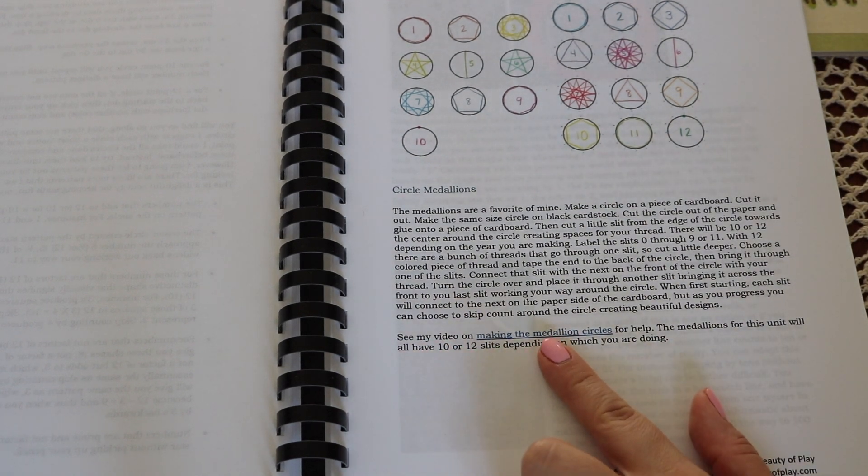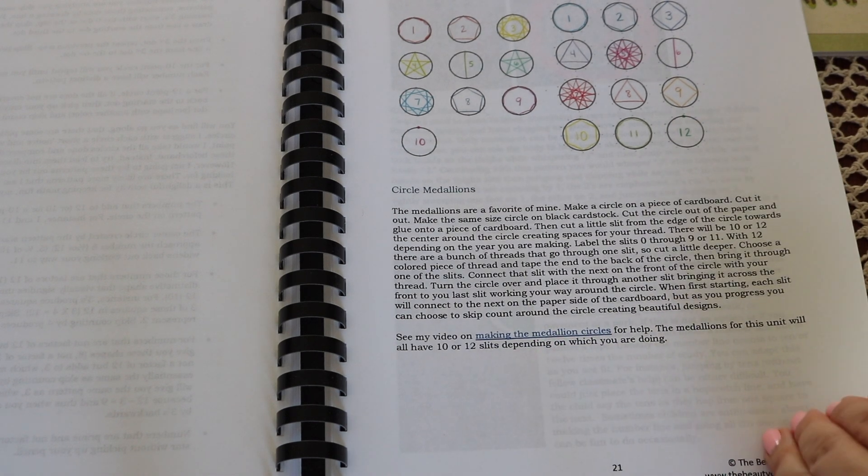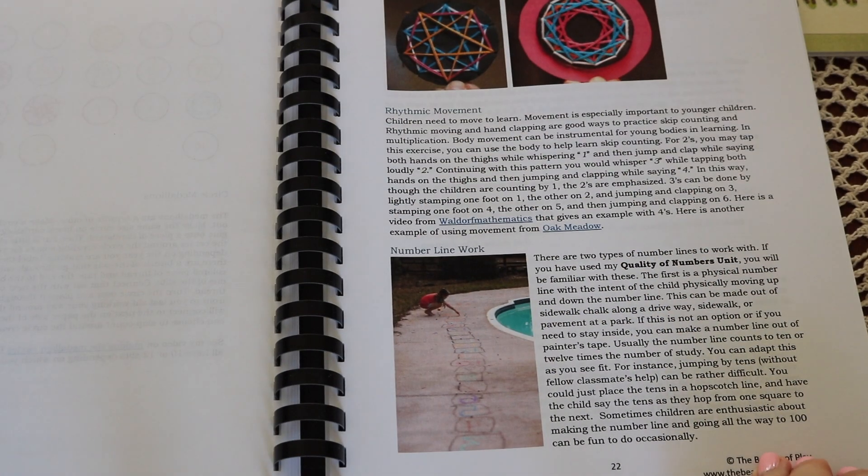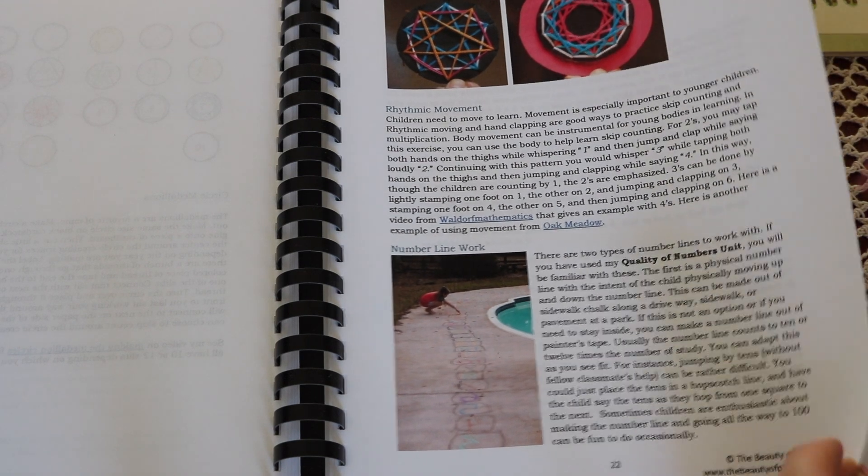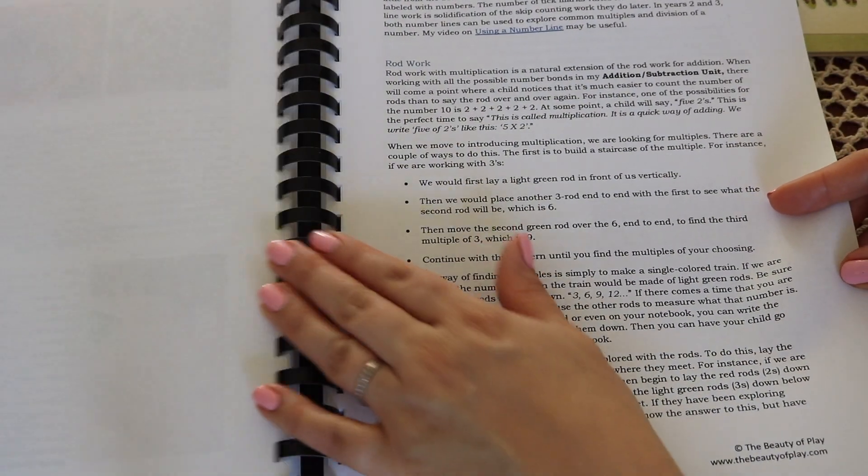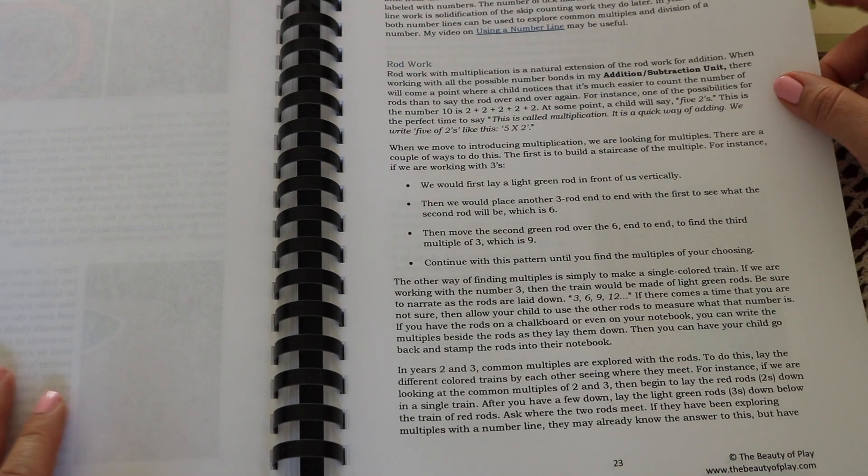In this introduction, you'll also find information and portions on math journaling, narration, color coding, rhythm, mental math tools, and the language of math. There is also written explanations of specific fundamental work that can be done with each number each year. Some examples are the multiplication flower, numbers on a 10-point and 12-point circle, circle medallions, movement, number line work, number compositions, multiplication chart, counting wheel, and riddles.